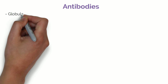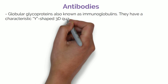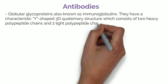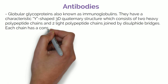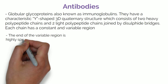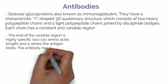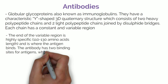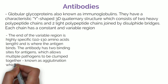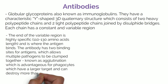Antibodies are globular glycoproteins also known as immunoglobulins. They have a characteristic Y-shaped 3D quaternary structure which consists of two heavy polypeptide chains and two light polypeptide chains joined by disulfide bridges. Each chain has a constant and variable region. The end of the variable region is highly specific and is around 110 to 130 amino acids in length, and this is where the antigen binds. Antibodies have two binding sites for antigens, which allows multiple pathogens to be clumped together — known as agglutination — which is advantageous for phagocytes, giving them a larger target and allowing them to destroy more than one pathogen at a time.